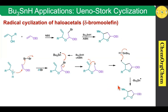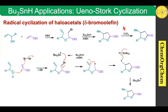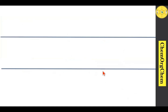This particular reaction is highly useful in natural product synthesis. When you use chromic acid, that means Jones reagent, which produces the corresponding lactone product. Here you see some examples based on Ueno-Stork cyclization.